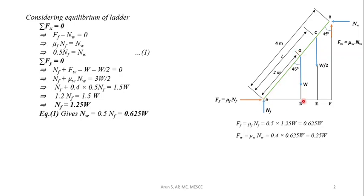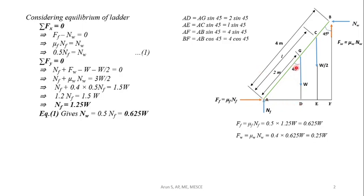For triangle AGD, it is a right-angle triangle with angle 45 degrees. We find: AD = 2 sin 45°, AE = L sin 45°, AF = 4 sin 45°, BF = 4 cos 45°. These distances are found using trigonometric relationships from similar triangles AGD, ACE, and ABF.